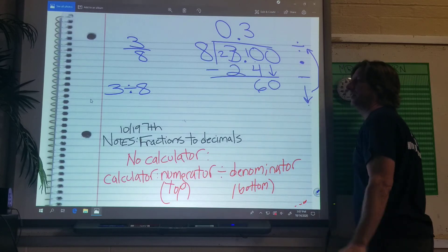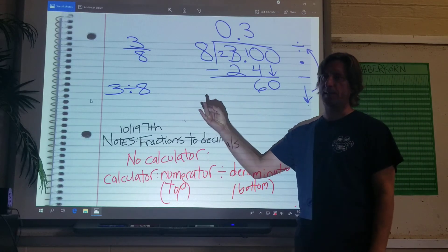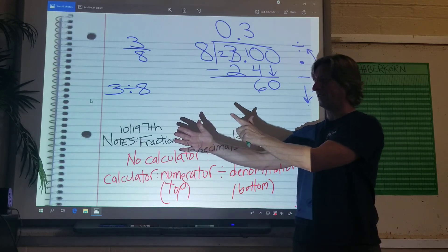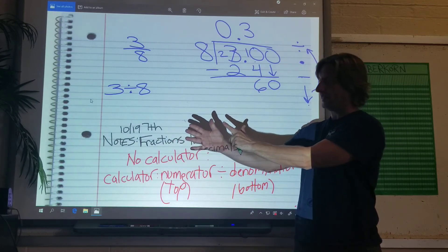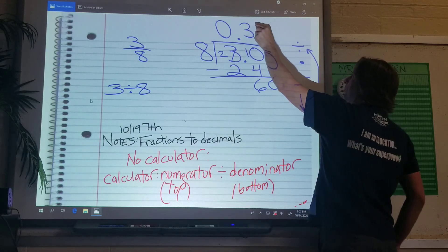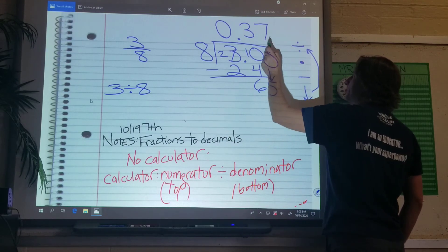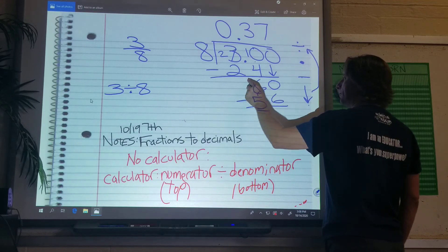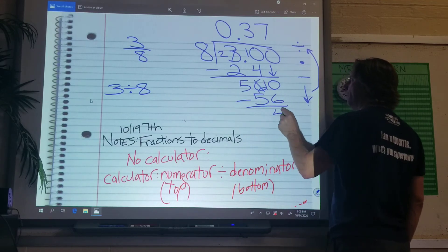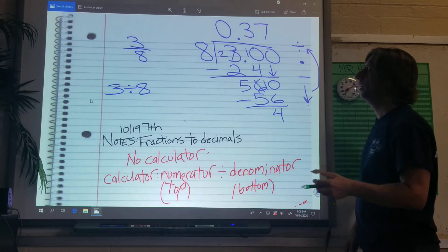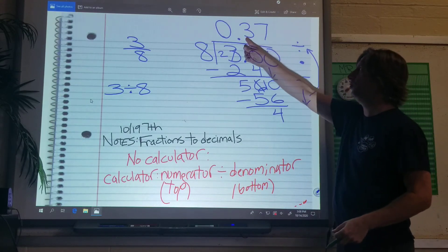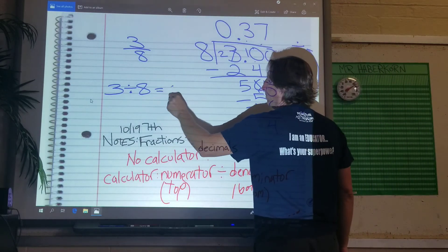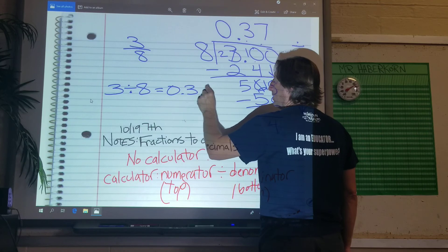Divide, eight's going into sixty. Eight, sixteen, twenty-four, thirty-two, forty, forty-eight, fifty-six. Sixty-four. Too many. All right. Seven times. Can we divide? We multiply. Seven times eight is fifty-six. Subtract. I get four. We could keep going. But we're not going to keep going. We're just going to do two numbers after the point. All right. So zero point thirty-seven is our decimal.